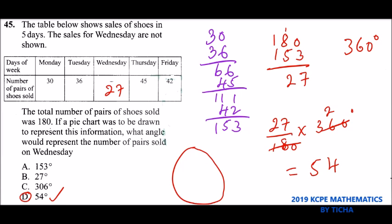So here you are tested whether you understand the pie chart and how we represent information in terms of degrees, where the total degrees around the pie chart is 360. So we can be able to represent that information on the pie chart. That's how you do that question.